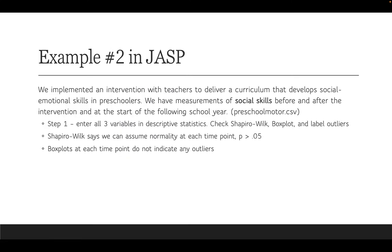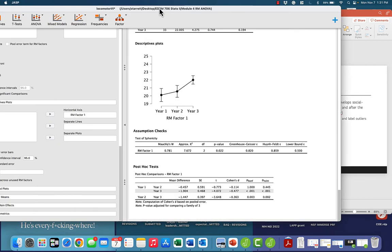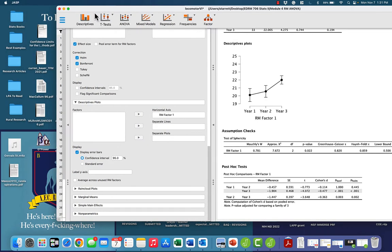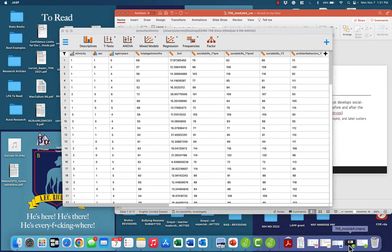Let's do one more example. This time we're going to use a different data set — preschoolmotor.csv. In this study, we implemented an intervention with teachers to deliver a curriculum that develops social-emotional skills in preschoolers. We have measurements of social skills before and after the intervention and at the start of the following school year. We're going to start with our assumptions, so let me open up our other JASP file.